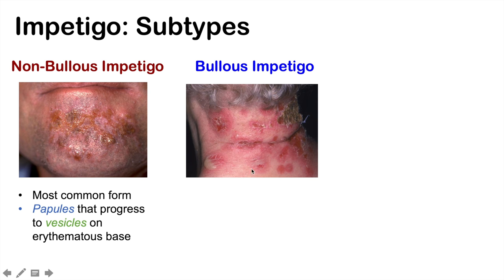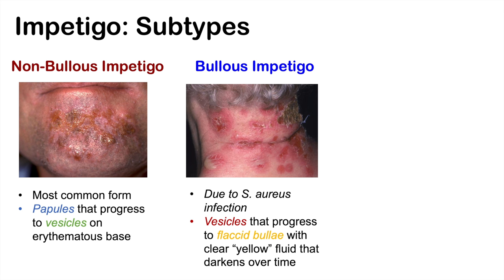Bullous Impetigo has bullae, and it's particularly important to recognize that bullous Impetigo is caused by a Staphylococcus aureus infection, as opposed to other Impetigo infections which are often caused by Group A strep. With this condition, it's vesicles that progress to flaccid bullae with clear yellow fluid that darkens over time. If the bullae don't erupt, that fluid will become darker and darker.